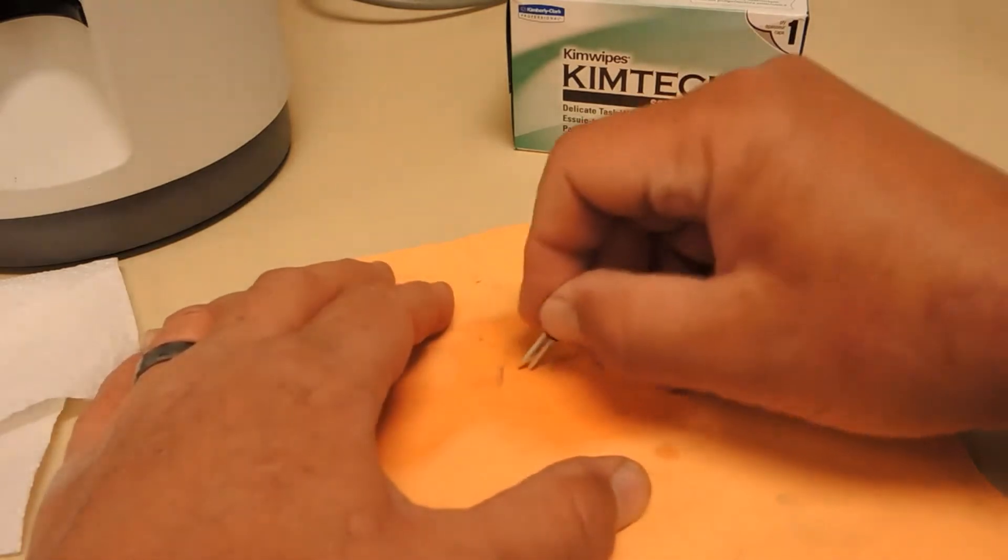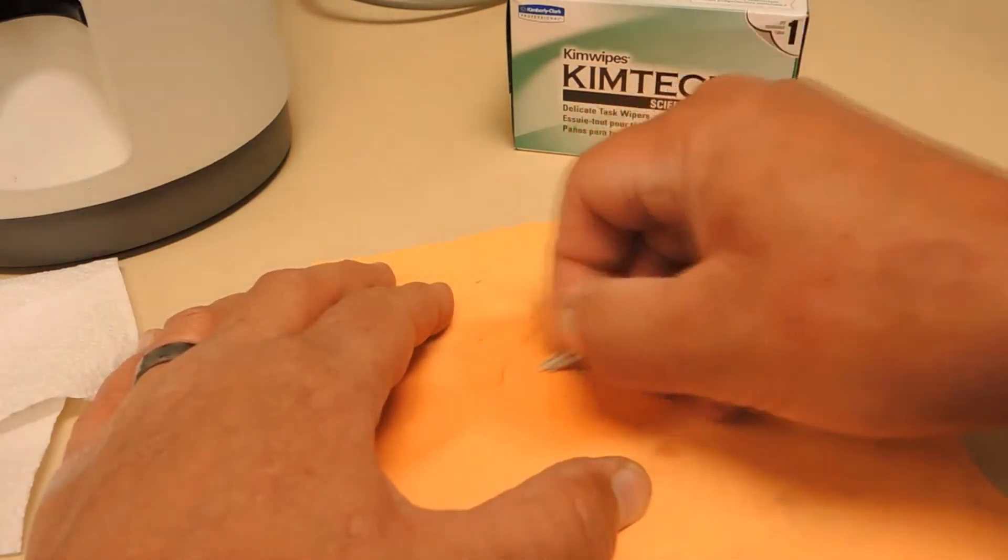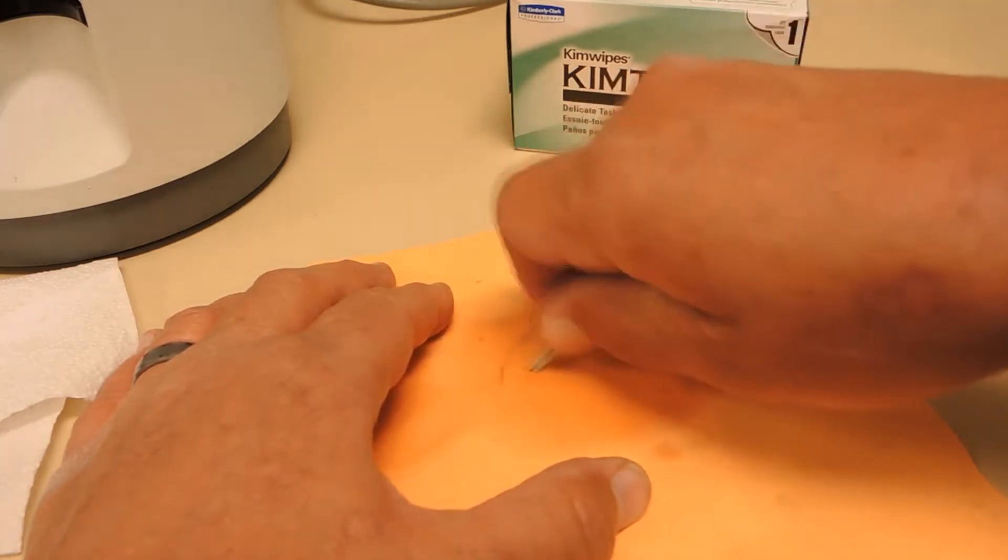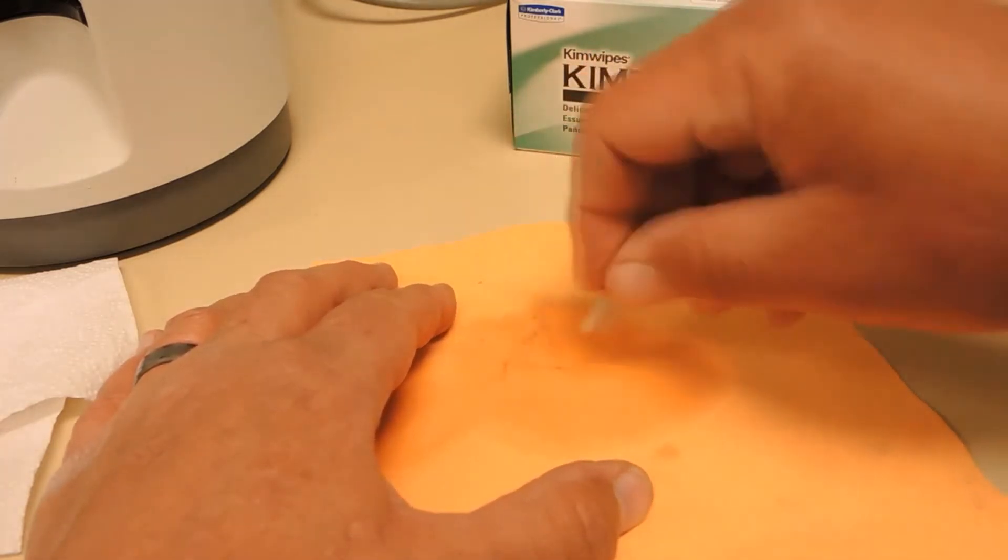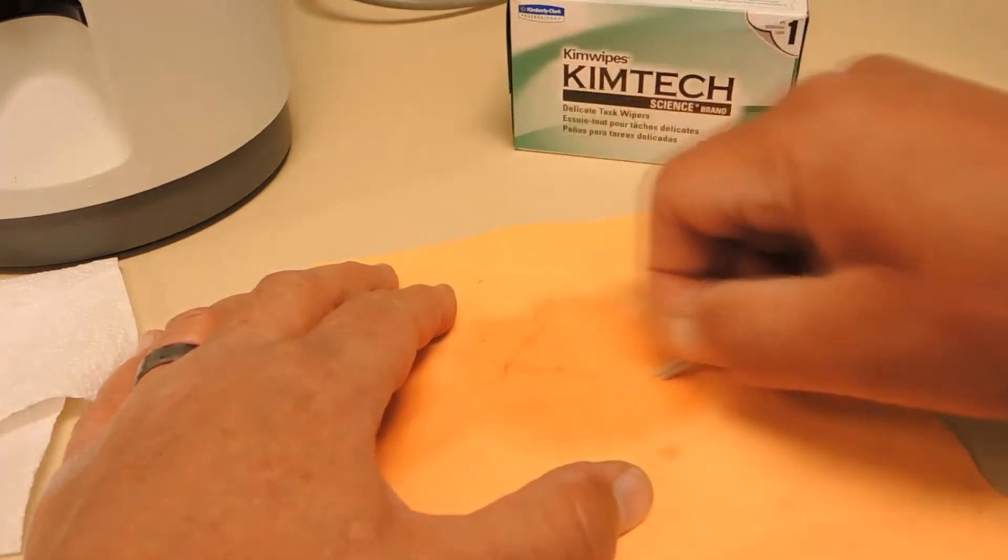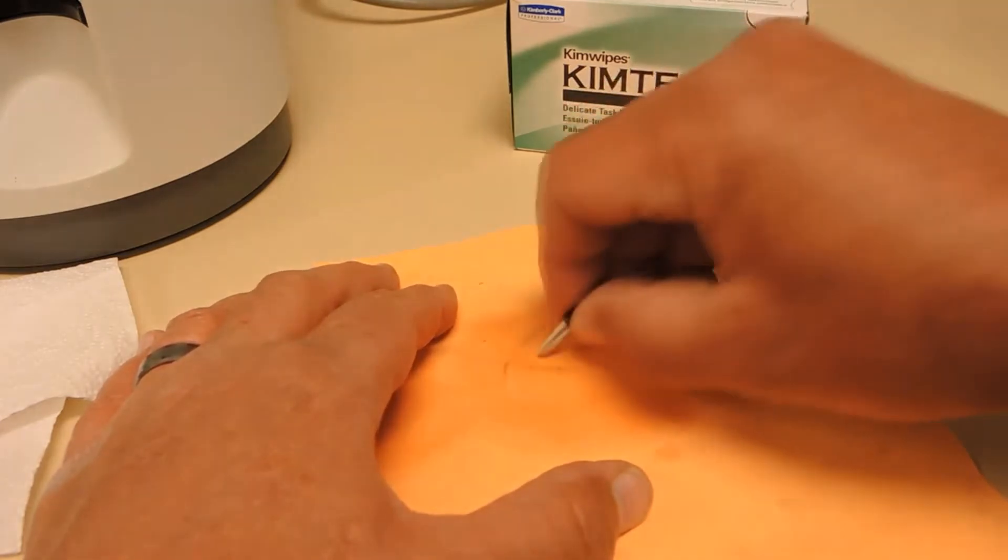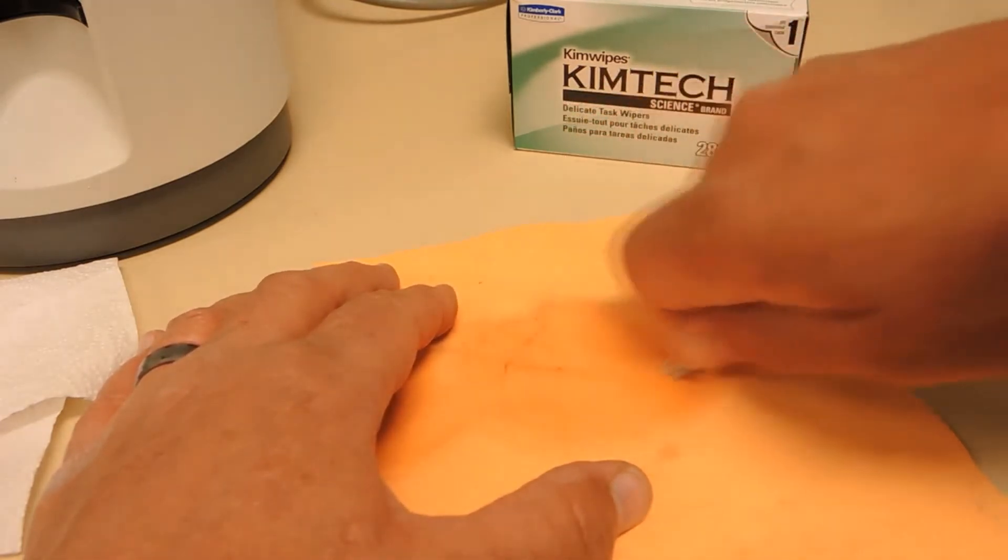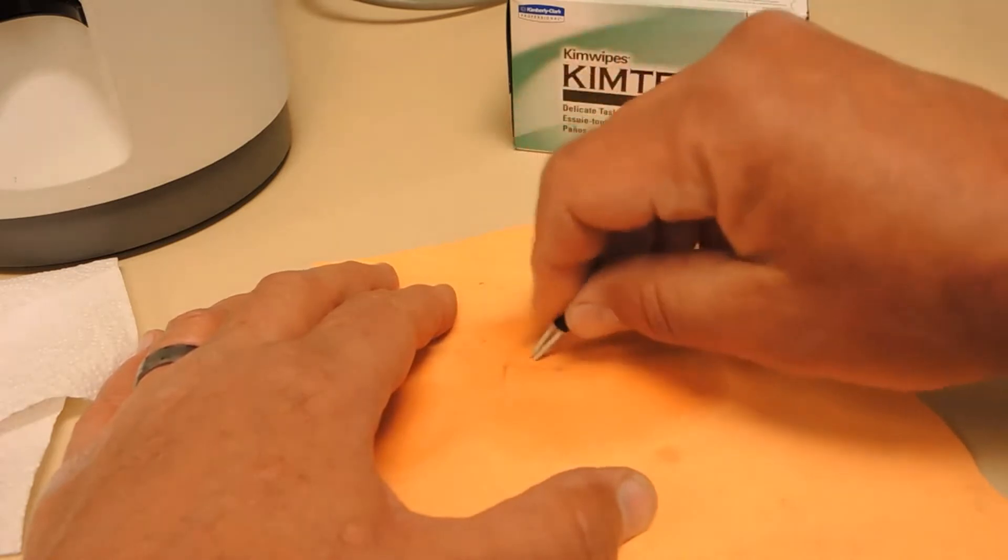Now we'll do the measurement electrode. Same process. Dragging it and then raising your hand at the end of the stroke so that you get the very tips cleaned off as well.